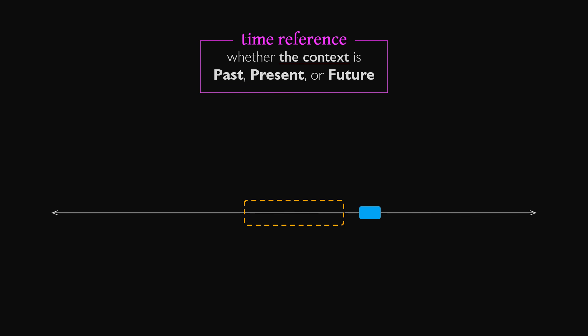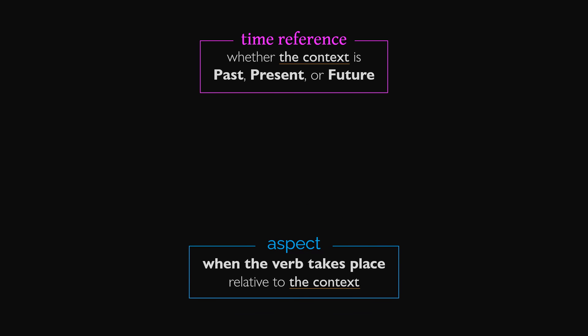But a big question remains, how do we account for the timing of verbs when they don't match up with the context? This is communicated through aspect, and we will cover that in the next video.